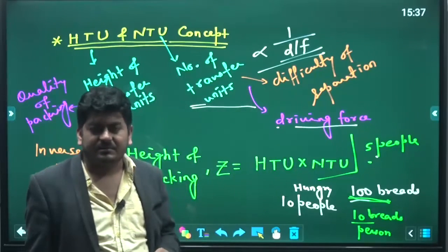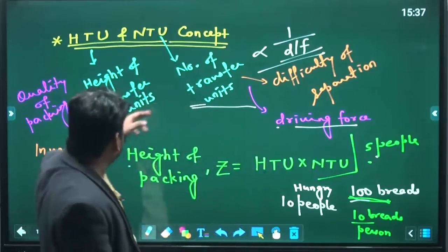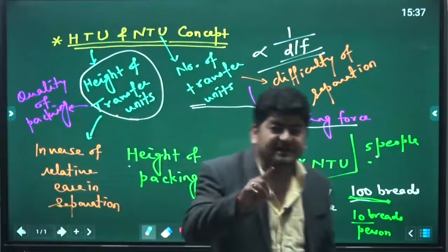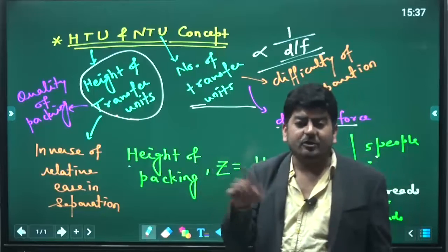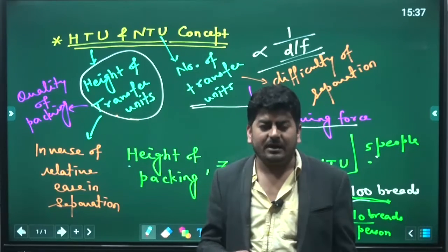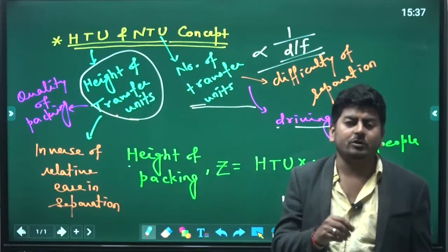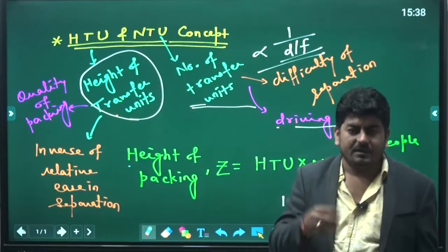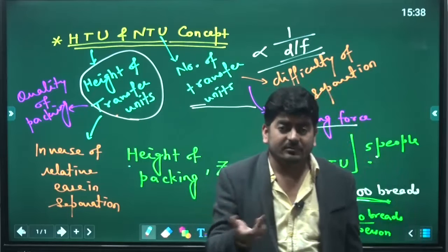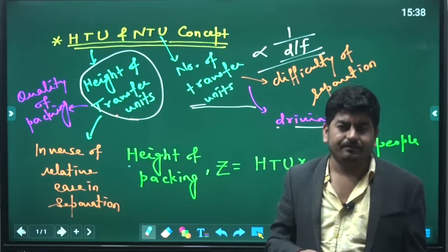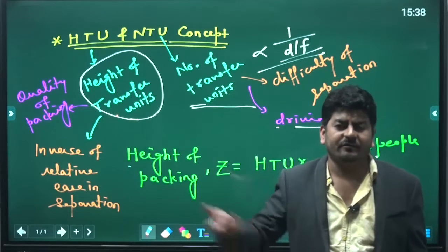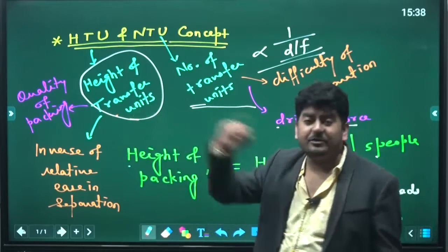But NTU is the secondary thing. First thing will be the HTU. Whenever we have to study things, whenever we have to compare things, first we will look at HTU. After that, if we are not able to answer based on HTU, then only we will go for NTU. Why? Because driving force will come second. First it will be different - like suppose you want to separate air into oxygen and nitrogen. We can do distillation also, but gas permeation through membrane is relatively easy and less expensive, so what will you prefer? Gas permeation.